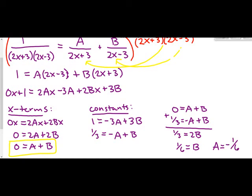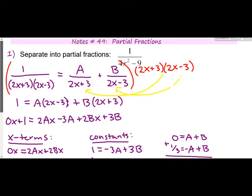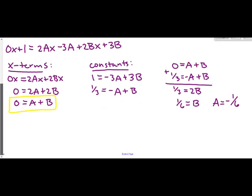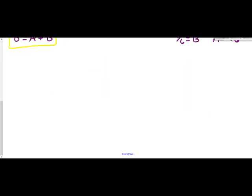Now that we know A and B, we substitute them back into our partial fractions. A over (2x + 3) becomes −1/6 over (2x + 3), and B over (2x − 3) becomes +1/6 over (2x − 3). We're not going to leave answers with complex fractions. We can simplify each: the first becomes −1 over 6(2x + 3).